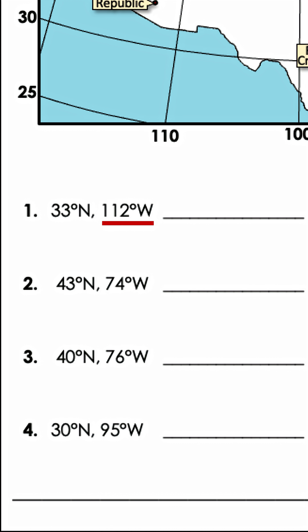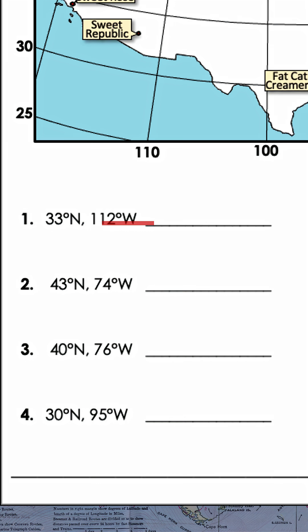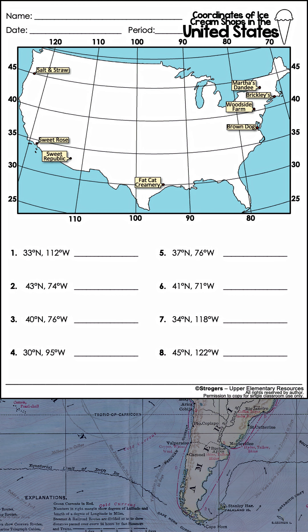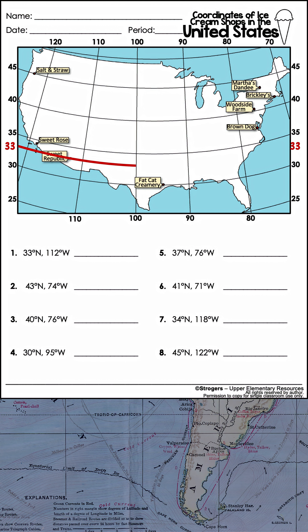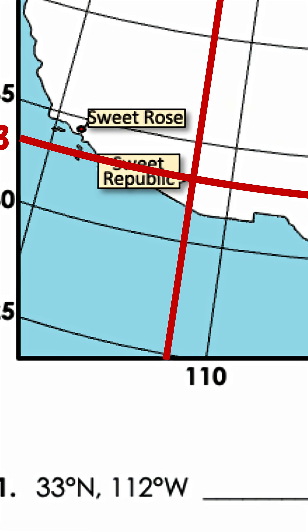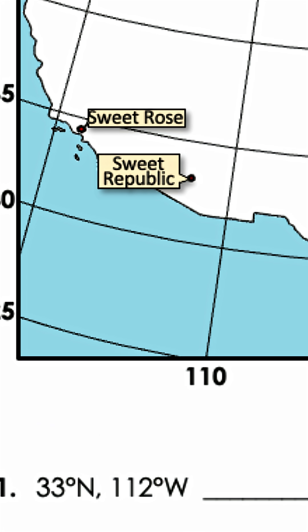Now let's locate 112 degrees west. That should be located about here. Once you put 33 degrees north and 112 degrees west together, only one location fits that answer: Sweet Republic. Thank you.